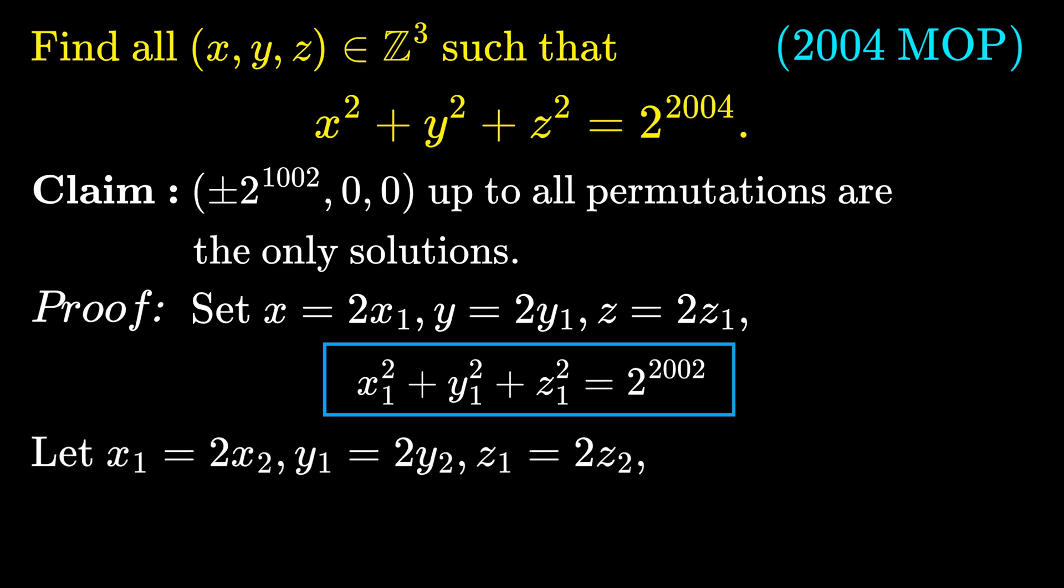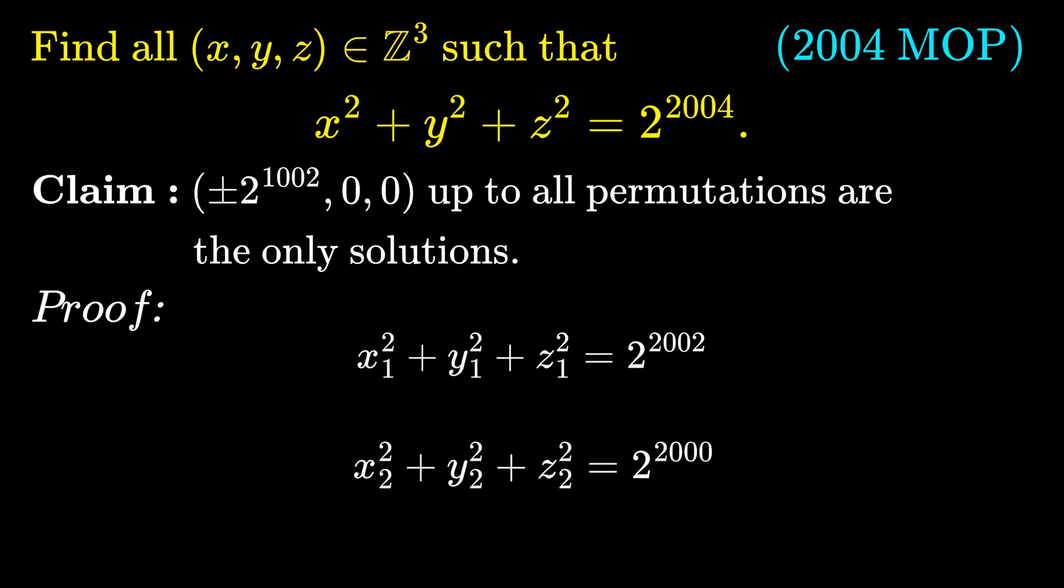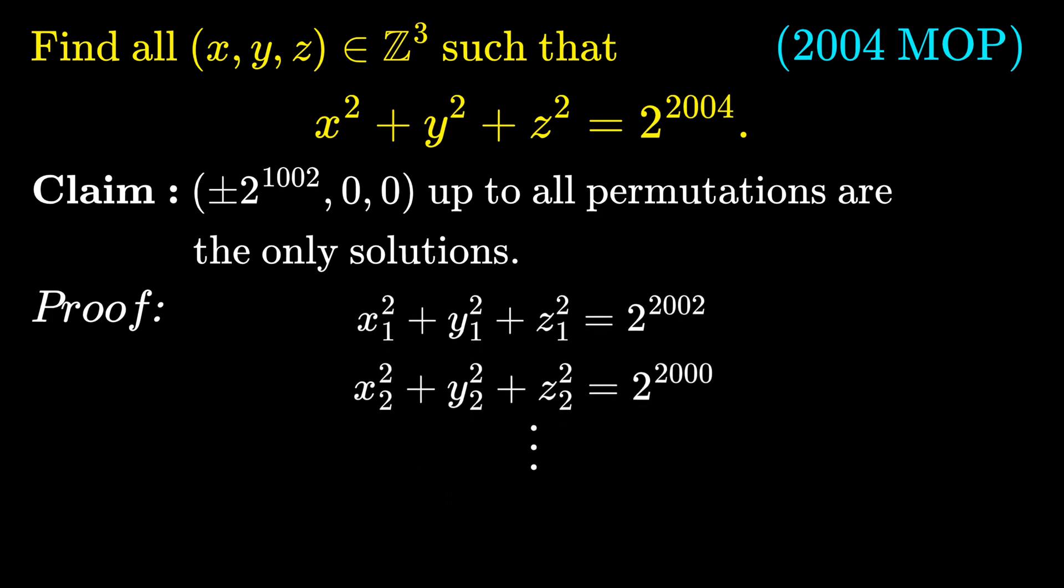Then, if we let x1 equal 2 times x2, y1 be 2 times y2, z1 be 2 times z2, and dividing both sides by 4 again, we have x2 squared plus y2 squared and z2 squared is equal to 2 power 2000, which is really the same sort of equation we have previously.